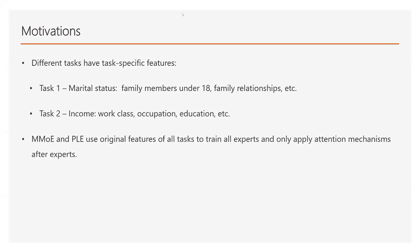In multi-task learning, different tasks have task-specific features. For example, in a popular public dataset UCI, when we predict marital status, we mainly use features of family members under 18 and family relationships. When we predict income, we mainly use features of work class, occupation, and education. Existing methods, MMOE and PLE, use original features of all tasks to train all experts and only apply attention mechanisms after experts. They do not distinguish task-specific features before experts.